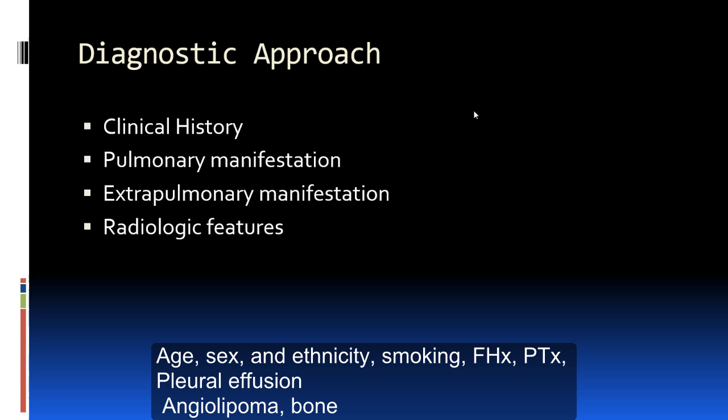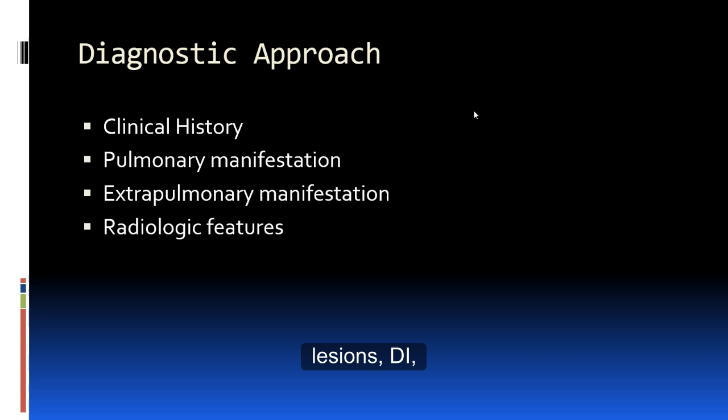The diagnostic approach usually includes a full clinical history — age, sex, pulmonary manifestations such as spontaneous pneumothorax or worsening dyspnea on exertion, and any extra-pulmonary manifestations such as skin nodules or abdominal pain that might hint at angiomyolipoma, as well as radiological features found on chest radiographs.